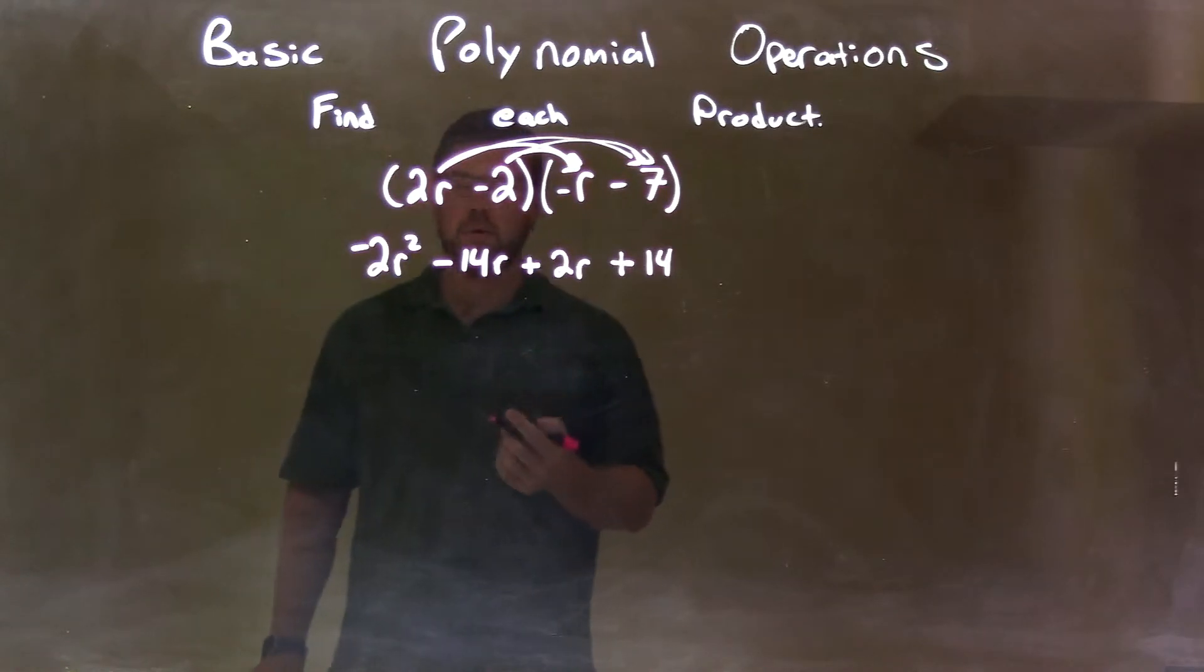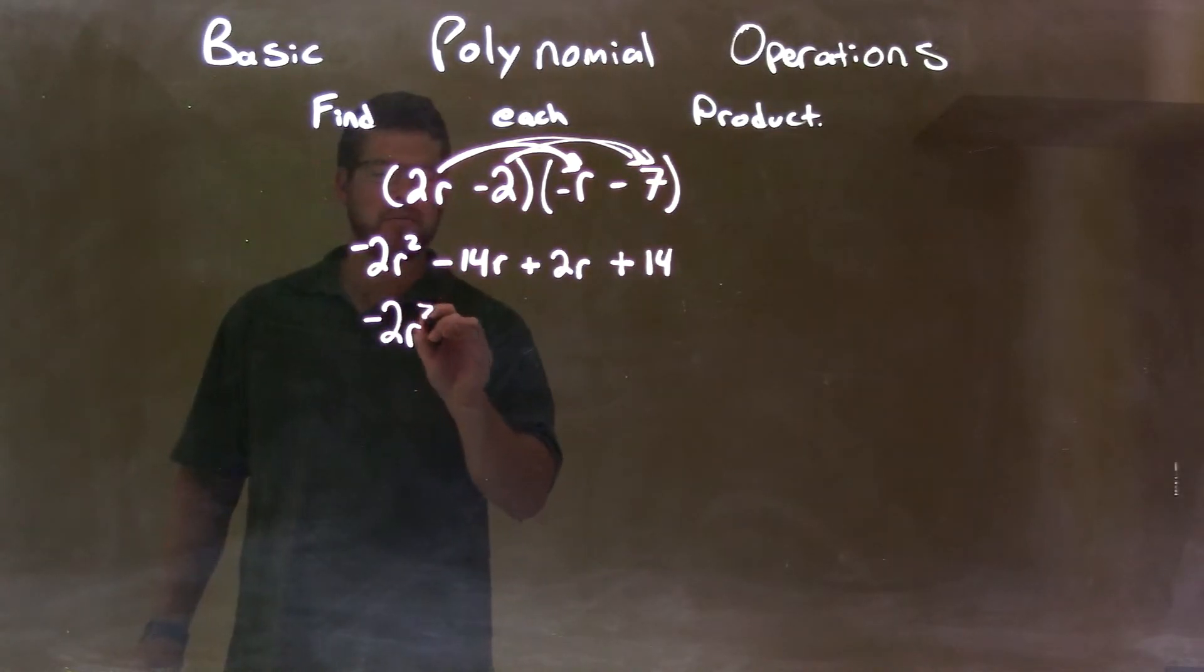So we have a positive 14 at the end there. Now we have to combine our like terms. The only like terms we see are the minus 14r and the 2r. Let's bring down everything else, negative 2r squared.